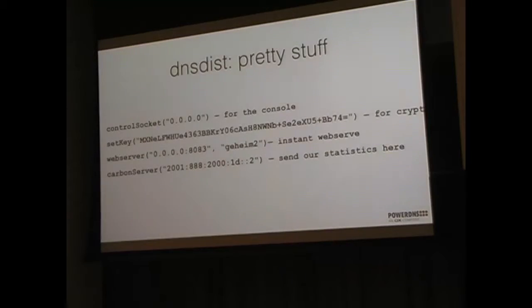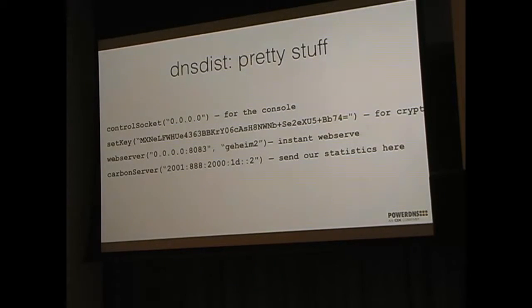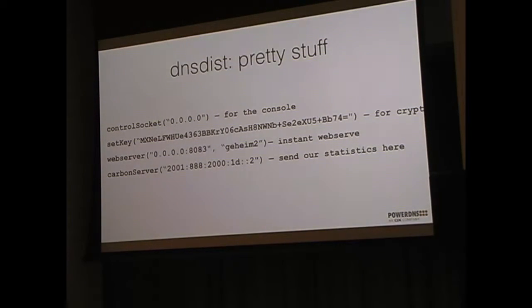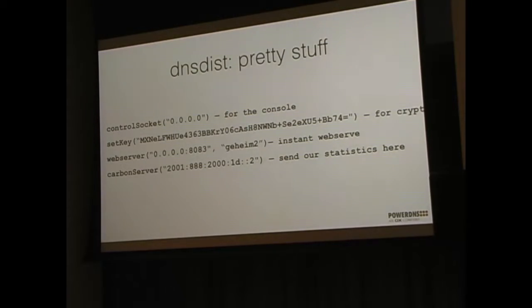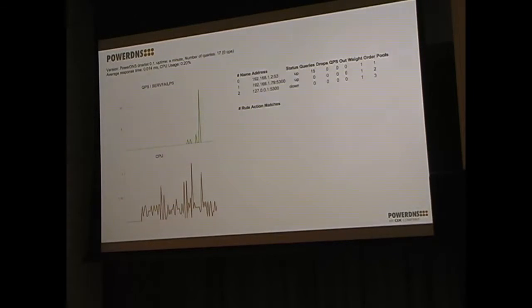To make it prettier, we add four more lines of configuration: a control socket so you can connect to DNS dist over TCP/IP to control it, a key pair generated by 'make key' so you can do this securely using libsodium and Dan Bernstein crypto, a web server on port 8083 with a password, and a carbon server where we emit our statistics. Then you get the default web server output — you can see the servers, whether they're up or down, CPU usage, and a graph calculated in the browser by JavaScript.